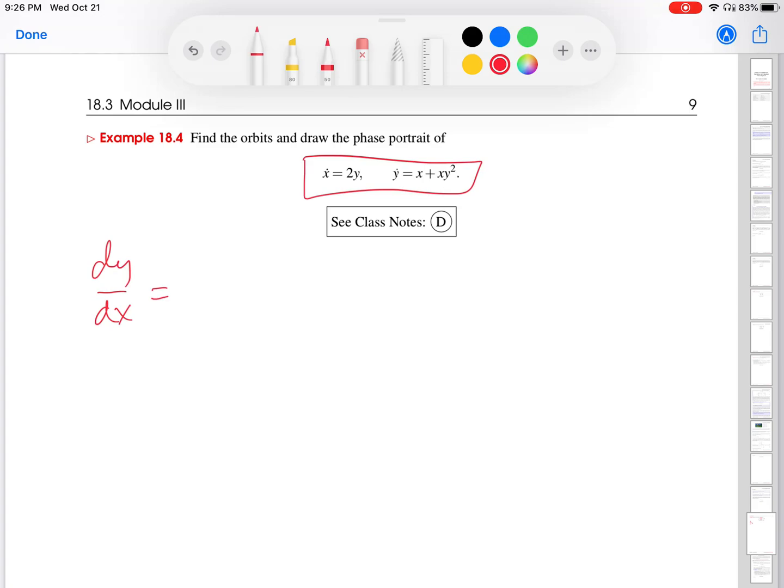So dy over dx equals x plus xy squared over 2y. Remember, it's y dot over x dot. And if I factor out an x here, I get 1 plus y squared over 2y. And again, this looks to be a separable ODE.